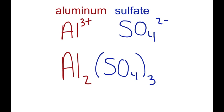And as you can see here, two times the positive 3 charge gives us a total of positive 6 in charge. And three times the negative 2 charge gives us a total of negative 6 in charge. And so the two aluminums exactly cancel out the charge of 3 sulfates. So the correct formula for aluminum sulfate is Al2(SO4)3.